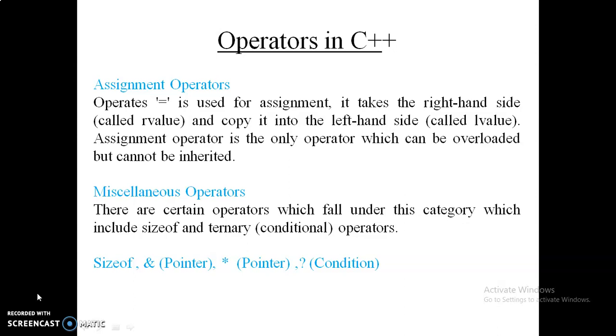So, those are basically the six operators in C++: arithmetic operator, logical operator, bitwise operator, assignment operator, miscellaneous operator, and relational operator.